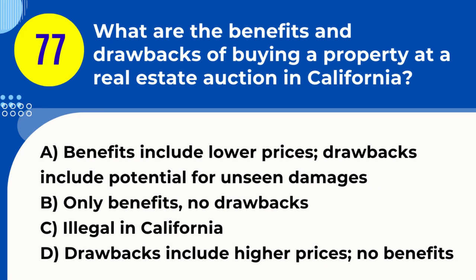Question 77. What are the benefits and drawbacks of buying a property at a real estate auction in California? A. Benefits include lower prices, drawbacks include potential for unseen damages. B. Only benefits, no drawbacks. C. Illegal in California. D. Drawbacks include higher prices, no benefits. Answer: A. Explanation. Buying a property at a real estate auction in California can offer benefits like potentially lower prices and quicker transactions. However, drawbacks include the risk of buying a property as-is, often without a thorough inspection, leading to potential unseen damages or issues that the buyer will have to address.